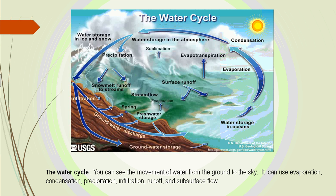This water cycle is constant. Water is constantly in movement — moving from the oceans up to the sky, up to the clouds, where it changes, comes back down, flows along the Earth, and eventually gets back into the oceans again. We use different methods to describe this: evaporation, condensation, precipitation, rain, runoff, and subsurface flow.